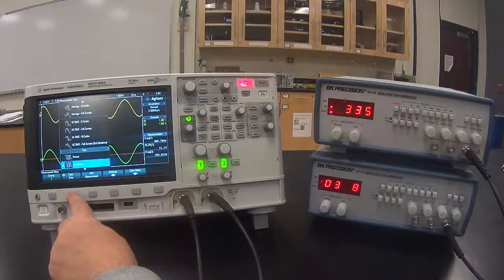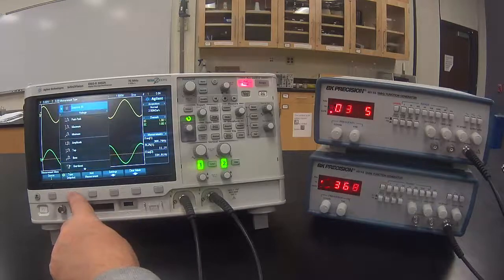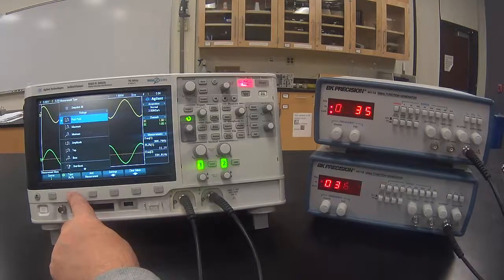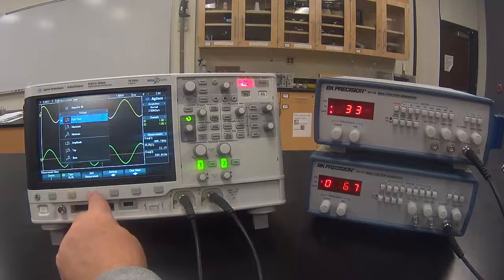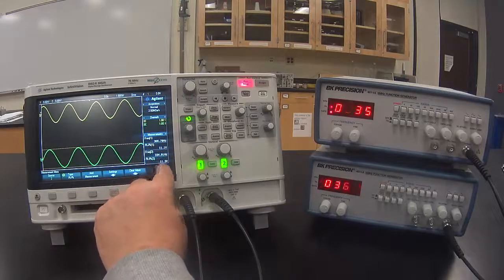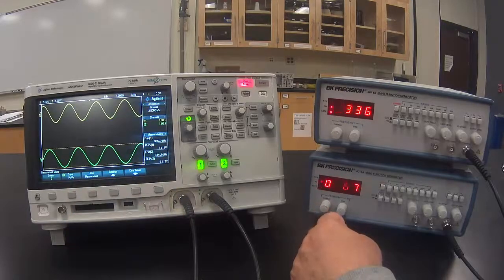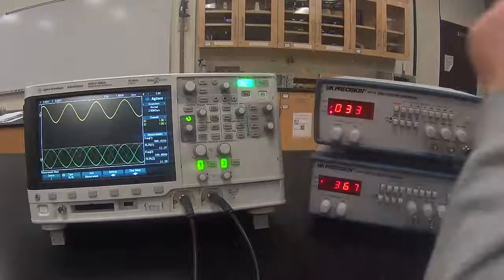Then I can look for peak-to-peak voltage. I have to press it a lot of times to get there. Then press add measurement. Now I have the same two measures for both channel 1 and channel 2. Let me push the Run Stop button one more time and make it go again.